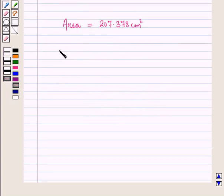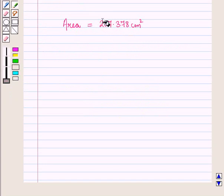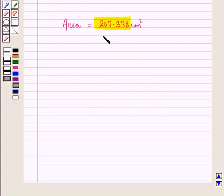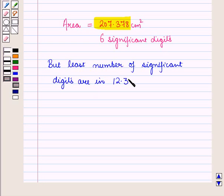Now here we can see in the answer we have 6 significant digits, but least number of significant digits are in 12.3, that is 3. It means 12.3 is least precise number.